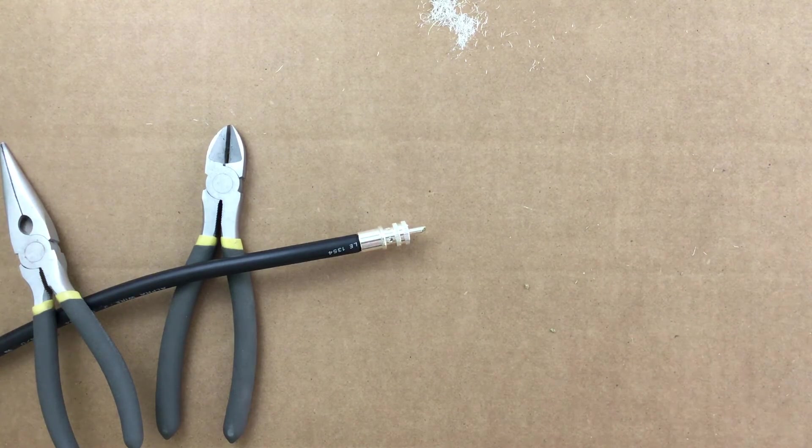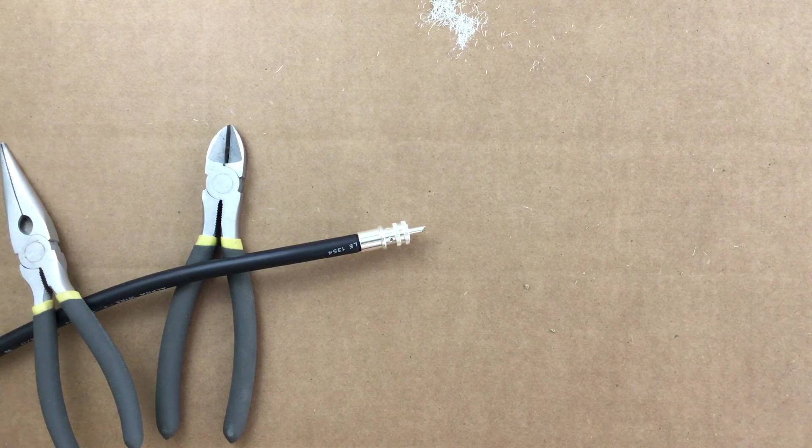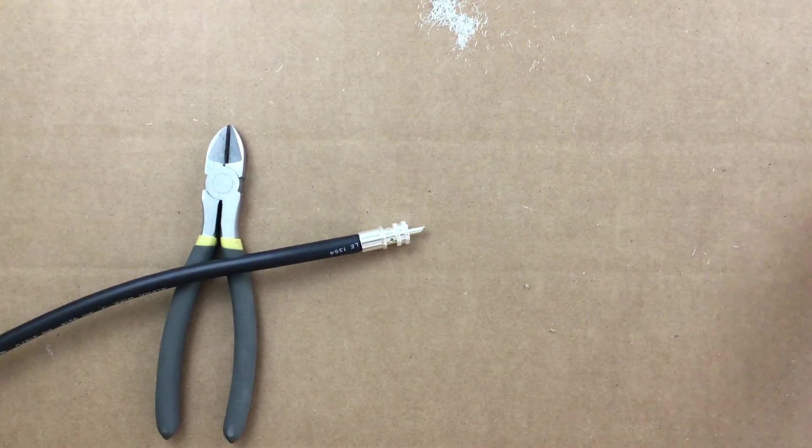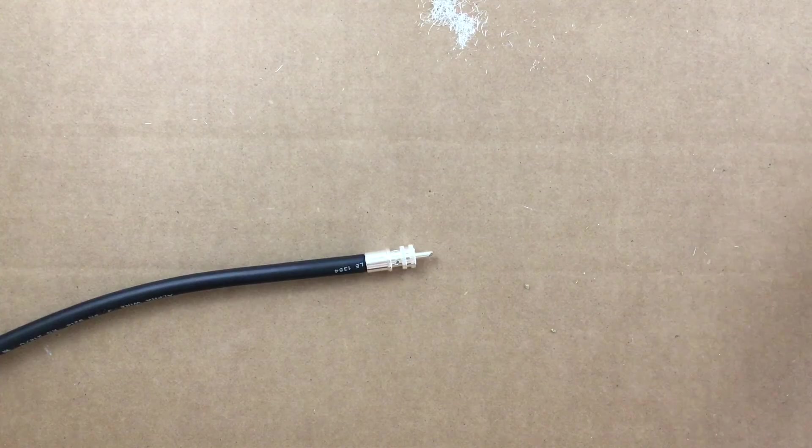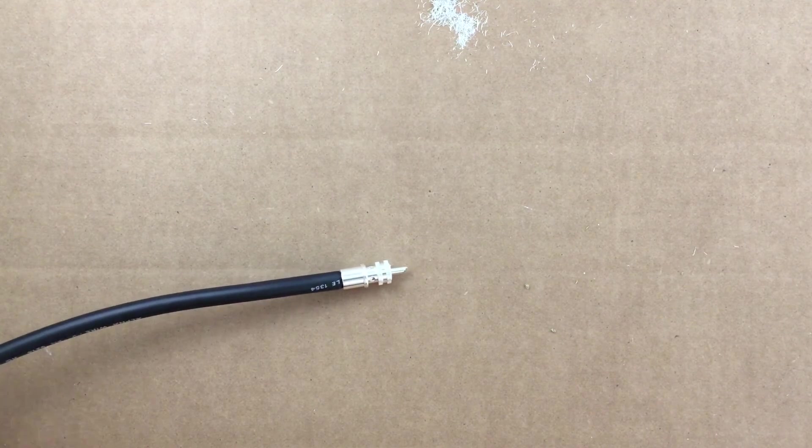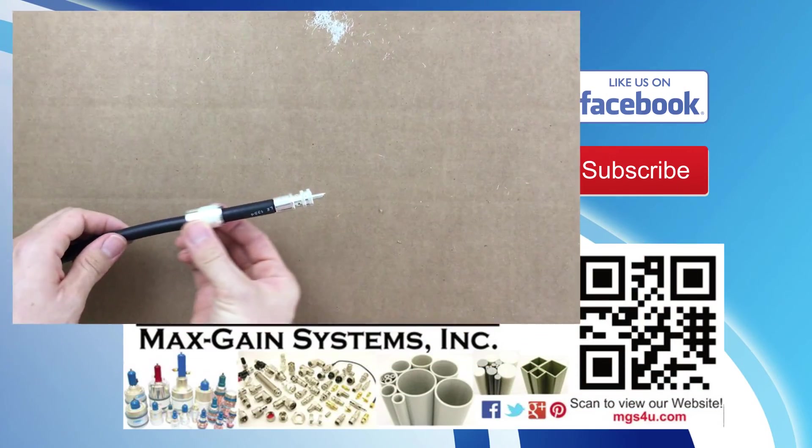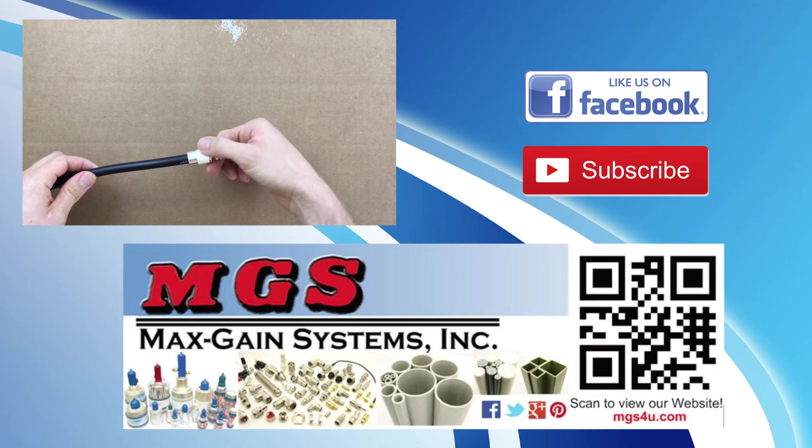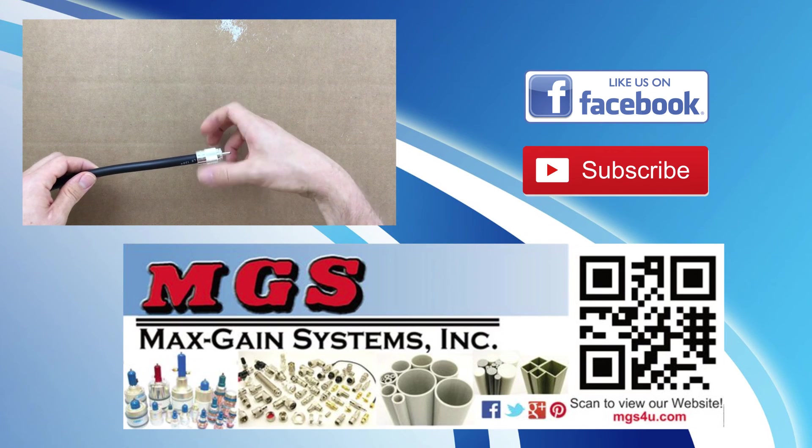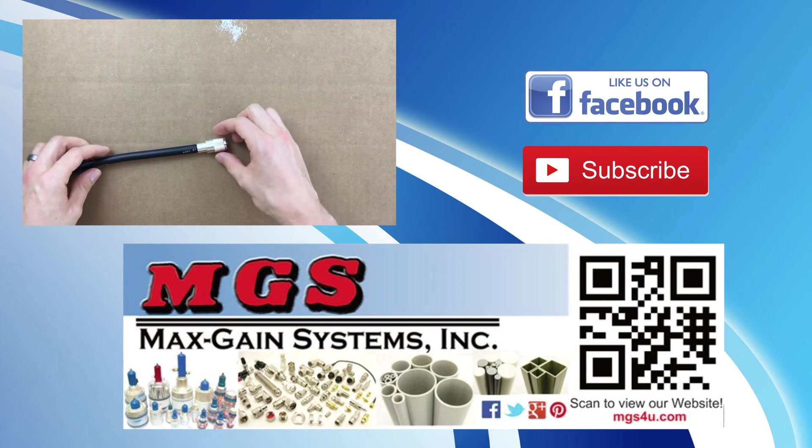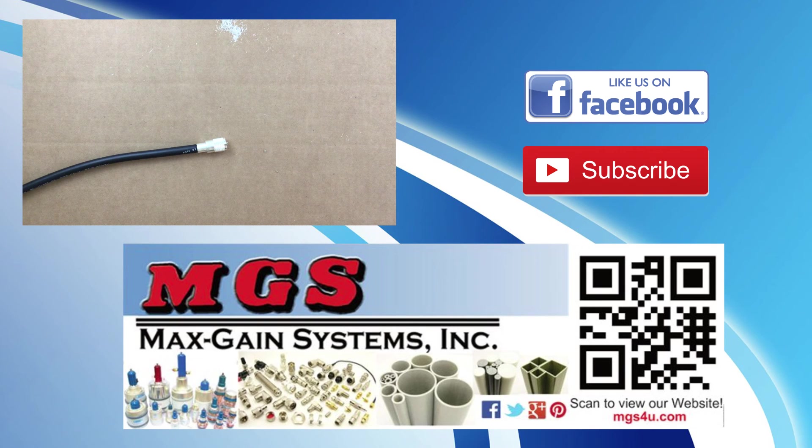Now be careful not to touch the main body of the PL259, but grab the outer shell we placed on the cable earlier and slide it up onto the PL259 main body. Heat will transfer quickly, so let the connector cool before attempting this. Screw the outer shell of the PL259 onto the main body. You have just completed the installation of a PL259 connector onto RG214 coaxial cable.